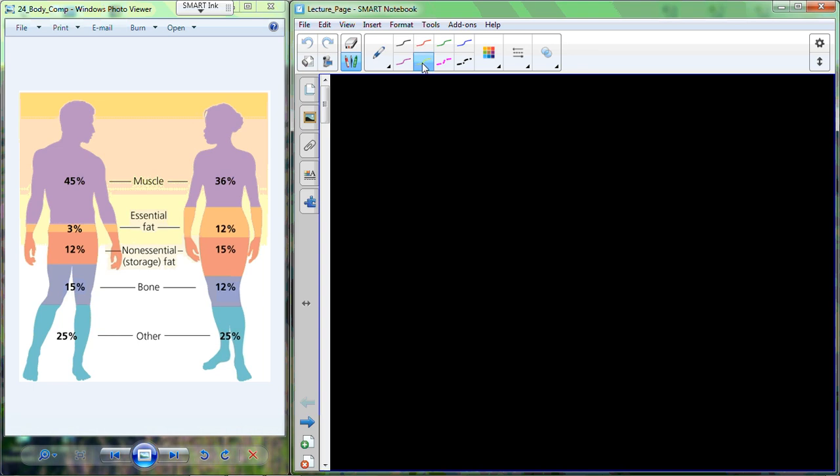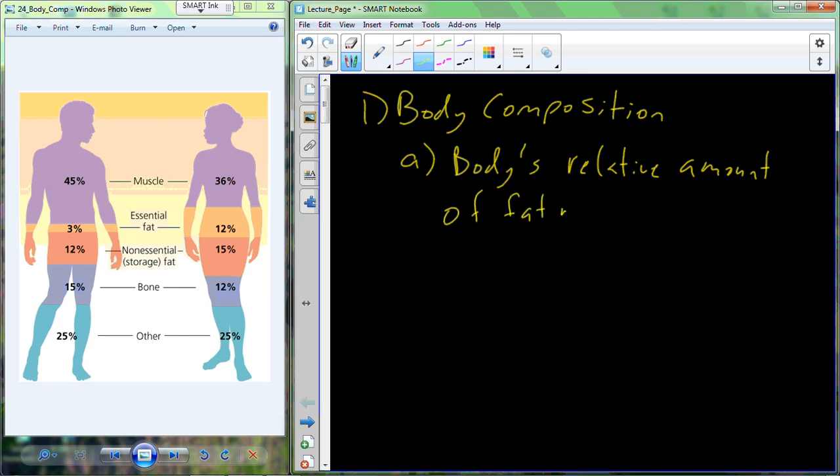This lecture today is on body composition. Body composition is defined as the body's relative amount of fat mass and fat-free mass. So it's really a ratio of the amount of fat, the mass of that fat, versus the mass of fat-free mass.